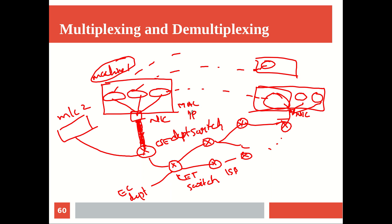Once it reaches the network interface card of the machine, by looking at the identifier of the process it is correctly delivered to the right process. Now you'll wonder — how is this process identified and how is this machine identified? For identifying the machine we have two concepts: a permanent address called the MAC address, and a logical address called the IP address. This is analogous to physical address and logical address in operating systems. In networks, the permanent identifier is the MAC address — a 48-bit number — and there is also a 32-bit IPv4 IP address as a logical address.